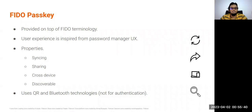The third property is cross-device access. Using a QR code, you can gain access on a device that doesn't support Passkeys using a device that does have Passkey support. The fourth property is discoverability — Passkeys contain metadata that allows your system to detect and present Passkeys to you, even if you don't know that you had Passkeys registered. The system can detect and present them to you.